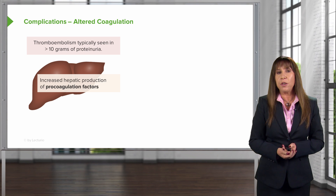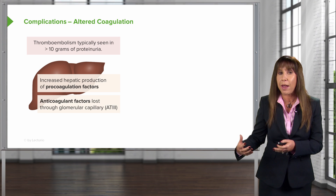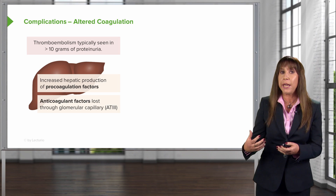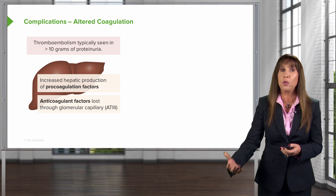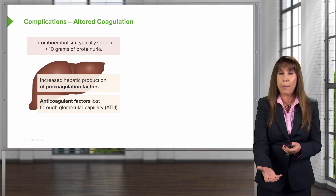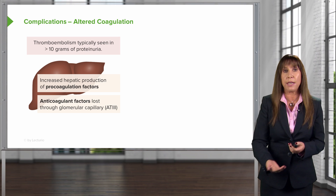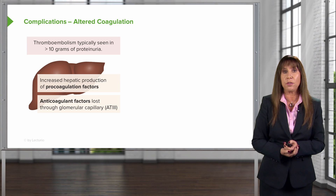Our patients have an increase in hepatic production of pro-coagulation factors, and at the same time, we just talked about how they have those clotting inhibitors that they're getting lost through that glomerular capillary wall. So they lose these anticoagulant factors.